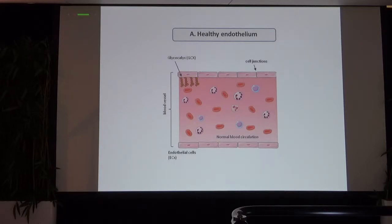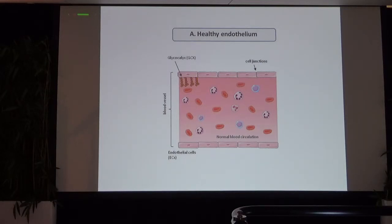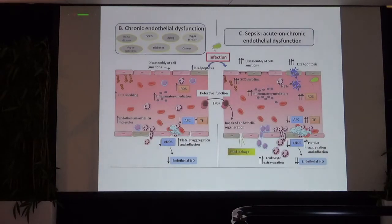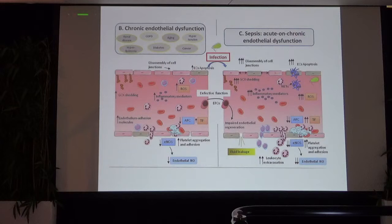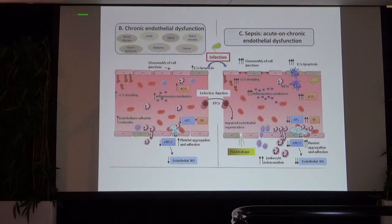This slide models a healthy endothelium: the glycocalyx protects the endothelium, microcirculation is healthy, cells circulate normally, and endothelial cells are healthy. In contrast, the model of chronic disease and aging shows a degree of glycocalyx detachment, disassembly of cell junctions, cell apoptosis, a chronic pro-inflammatory environment, nitrosative stress, chronic pro-coagulant phenomena, and increased adhesion of leukocytes to the endothelium. Additionally, endothelial progenitor cells — responsible for repairing the endothelium — are not working properly in diabetes or hypertension.